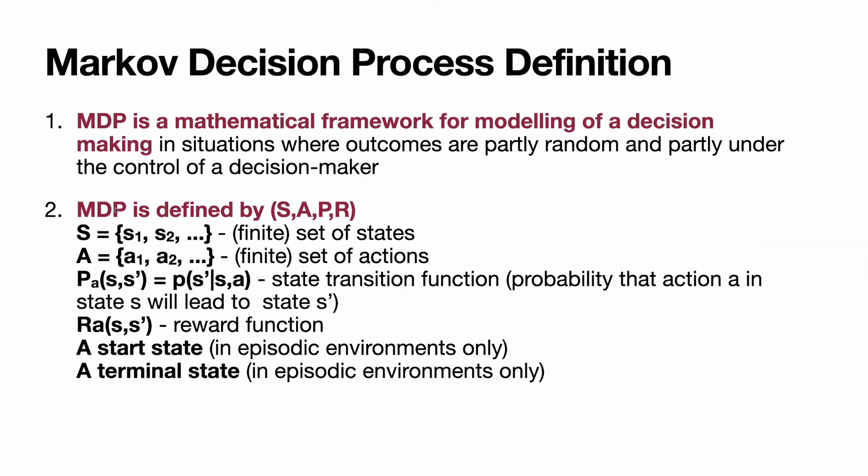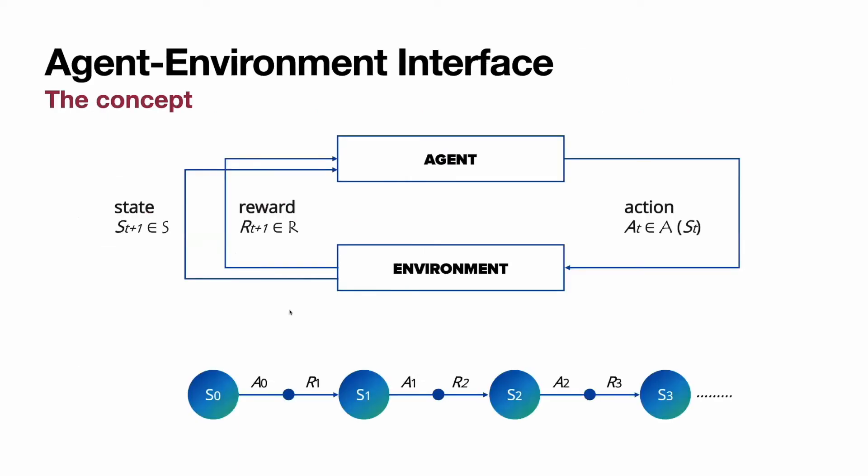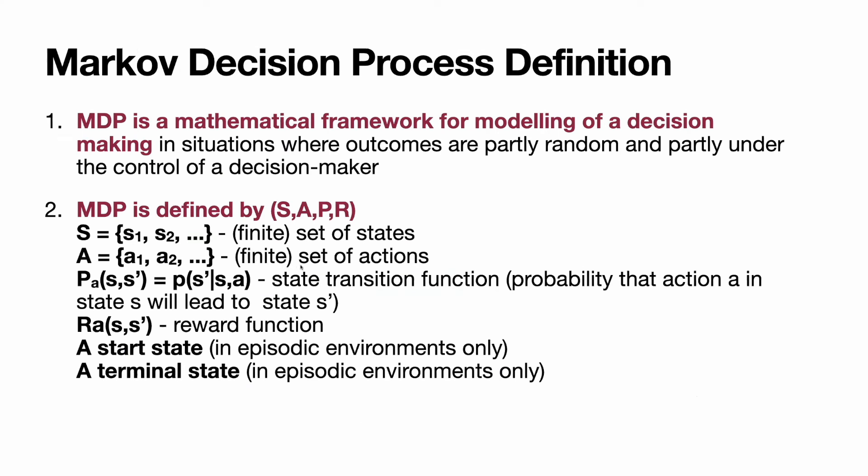MDP has four components. First component is a set of states. Set of states known in advance and fixed. A fixed and finite set of actions. What does agent can do? If you play chess, the board or S is always the board as it was, and the figures can make moves only typical per figures. We don't change rules during the play. So chess could be a perfect example of MDP without randomness.